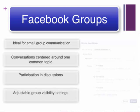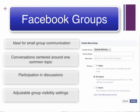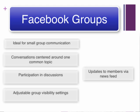Facebook groups can vary in visibility, ranging from closed groups where content is private and individuals can join by invitation only, or open groups where content is publicly viewable but requires administrative approval for members to join. Just like with pages, updates are made available to members' news feeds.